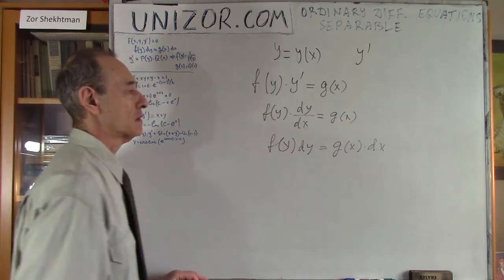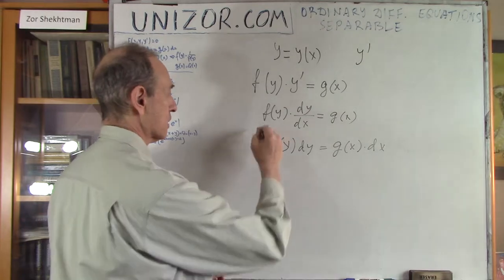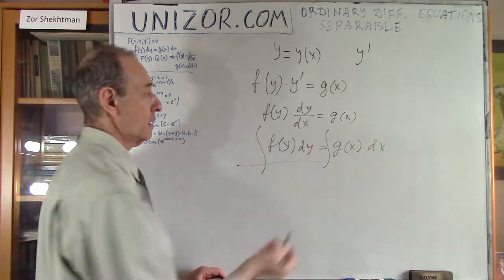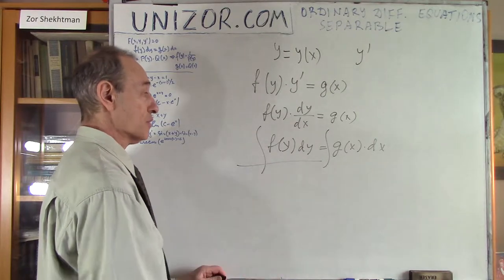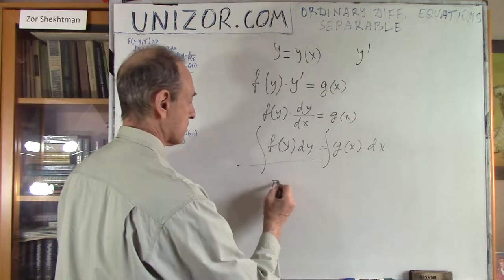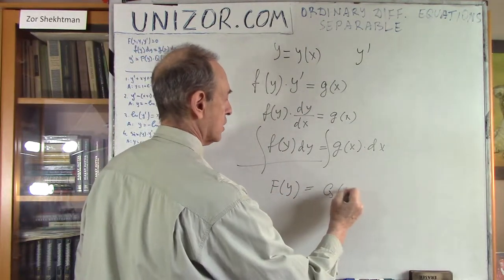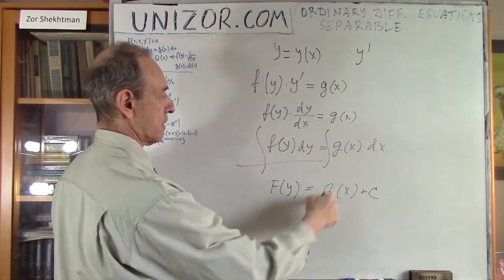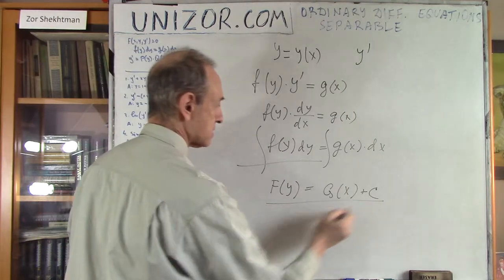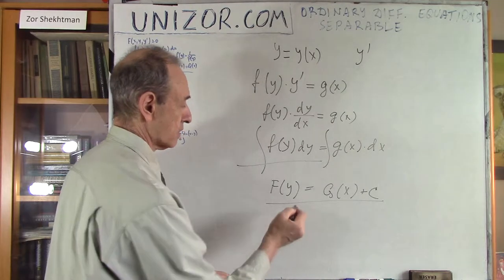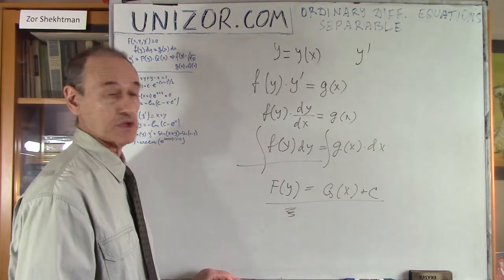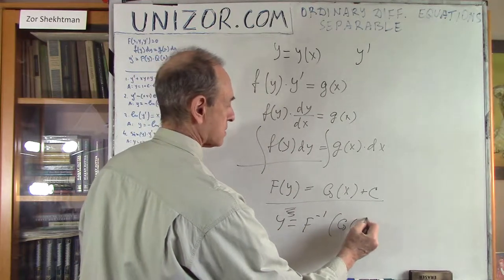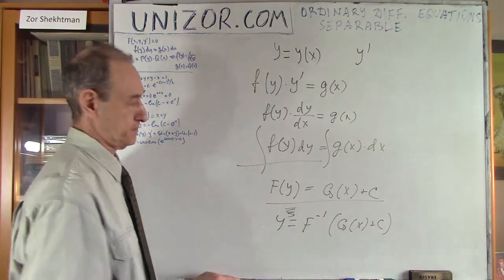This is the final form we would like our equation to be represented, because then we can integrate. This integral is basically an integral of one variable y, and this is one variable x. Presuming we can take these indefinite integrals, we will have something like F(y) equals G(x) plus c. And from this, if we are lucky, we can resolve it for y, giving us y = F⁻¹(G(x) + c).